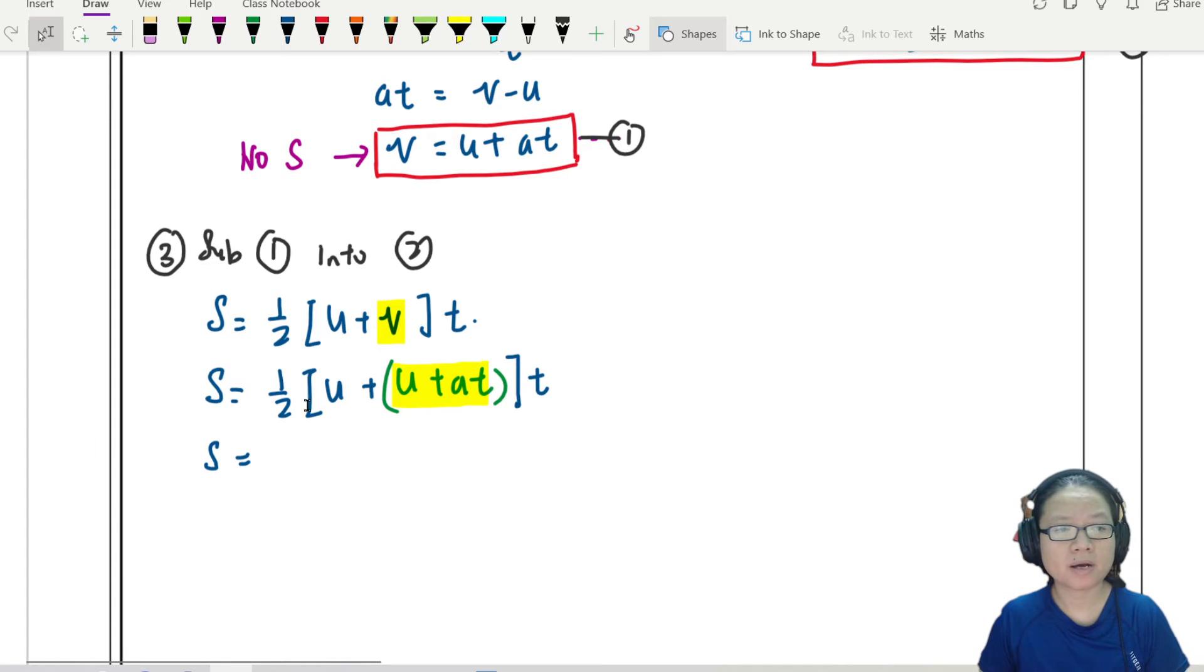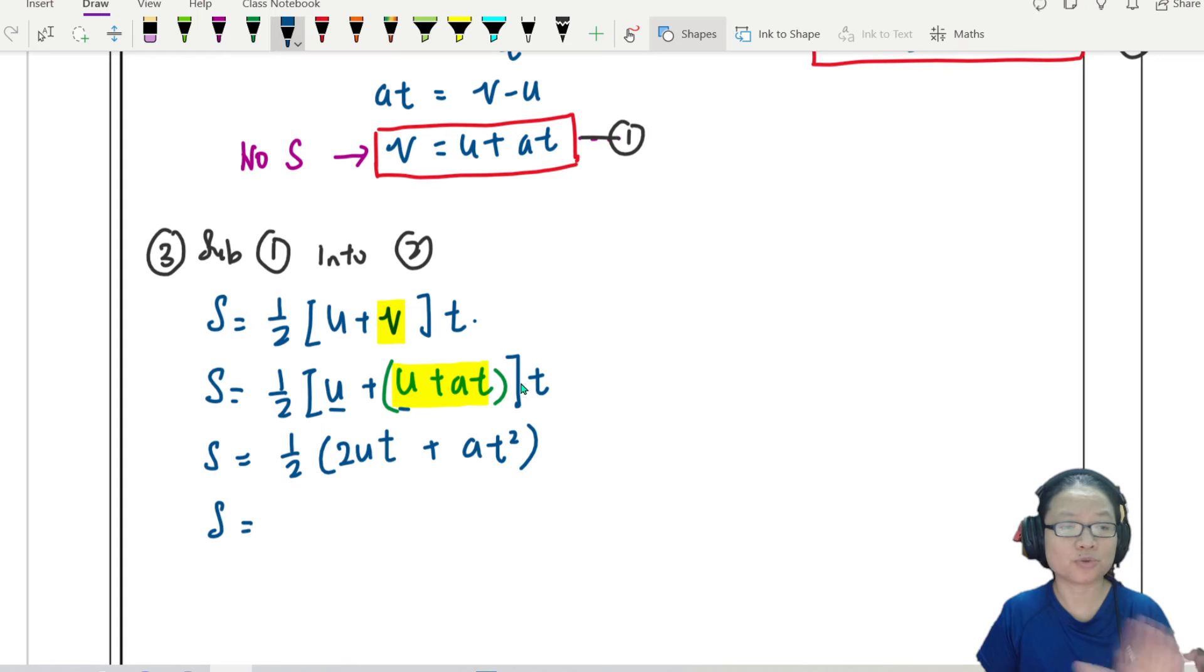This will be s. Half times u times t will be half ut. But you see here, we've got u and u. Might as well just add them together. So I'll add them together. 2u. Maybe I'll multiply the t in just to make it a bit clear. So I'll bring the t in. 2ut plus at squared. So from here, what I will get is 2 and 2 will cancel out. I'll get ut plus half at squared.